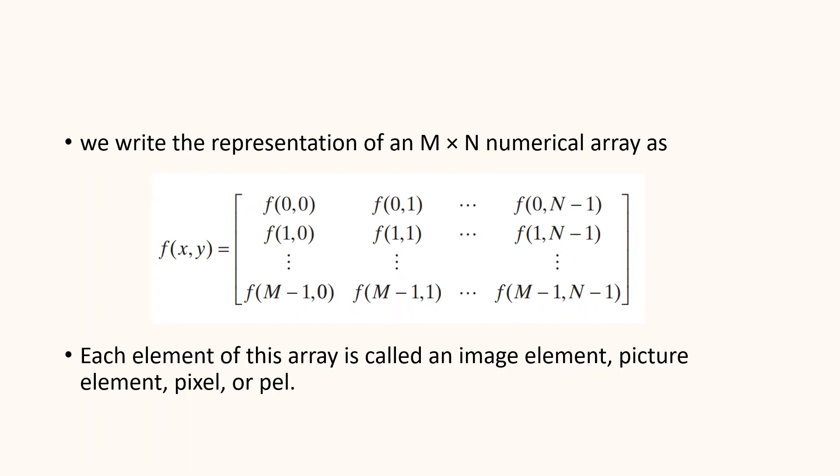We can represent this as an m×n numerical array f(x,y), where the elements range from f(0,0), f(0,1) through f(0,n-1) in the first row, continuing through f(1,0), f(1,1) through f(1,n-1) in subsequent rows, until f(m-1,0), f(m-1,1) through f(m-1,n-1) in the last row.